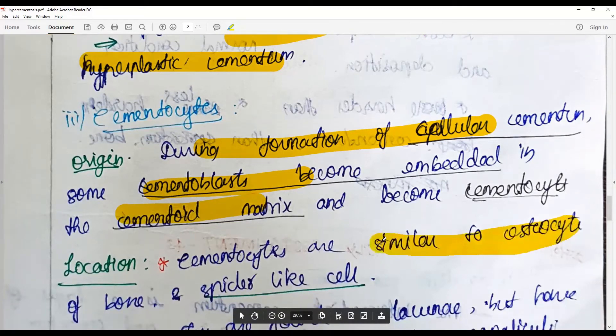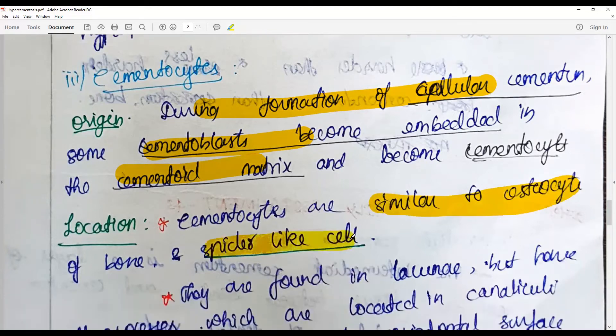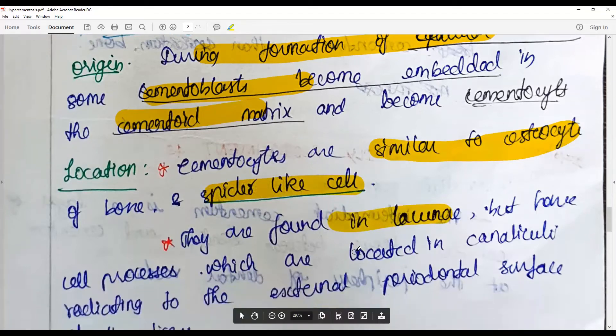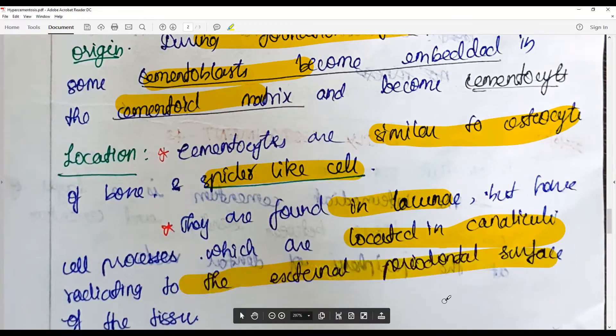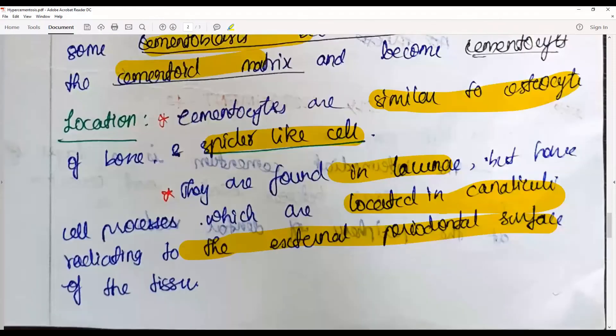They appear very similar to the bone resting cells called osteocytes and appear as spider-like cells. They are found in lacunae but have cell processes with canaliculi radiating towards the external periodontal surface of the tissues, whereas osteocytes have processes that extend in all directions. Here they are extending towards the periodontal surface in search of blood vessels.